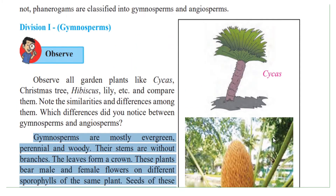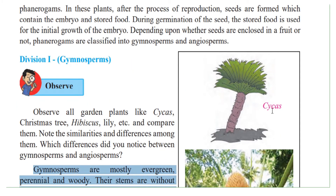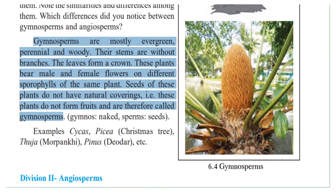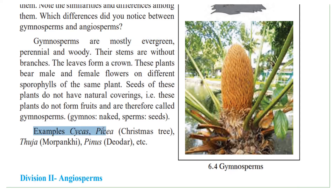Look at the examples given here. We have the cycas, and this is how we will find the seed. Examples are cycas, Piscia (the Christmas tree), then Thuja (the morpankhi), then Pinus (the deodar), etc.